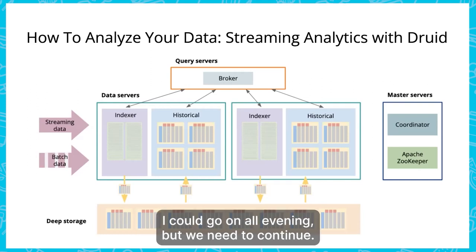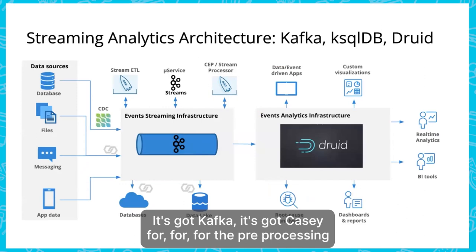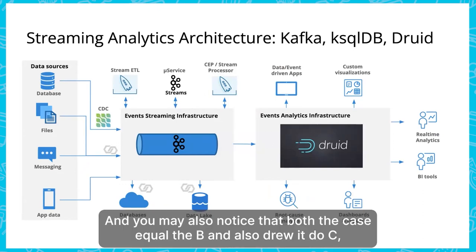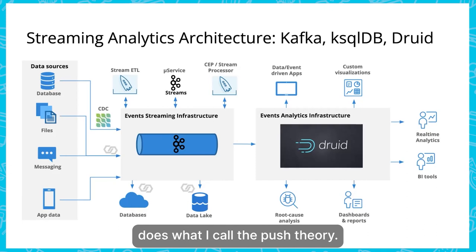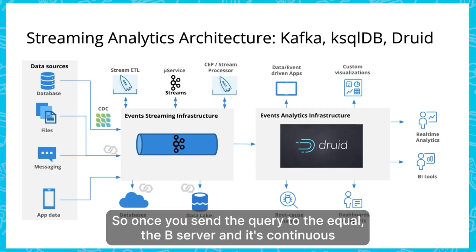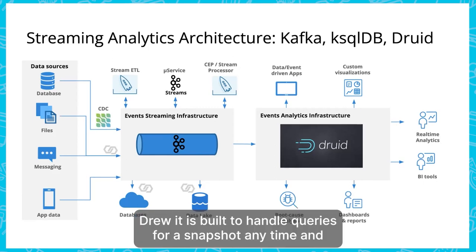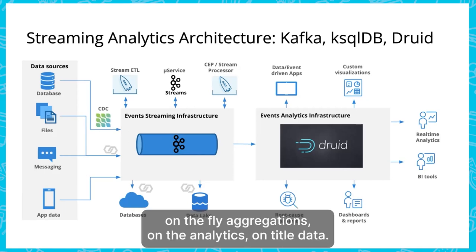Now we have all the components: Kafka, KSQLDB for preprocessing, and Druid for analytical queries. Both KSQLDB and Druid do SQL, but differently. KSQLDB does push queries — once sent, the query continuously emits results and builds a new Kafka topic. Druid is built for pull queries: snapshots in time, on-the-fly aggregations and analytics on detailed data.